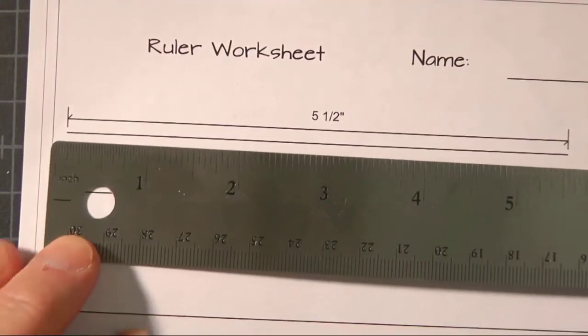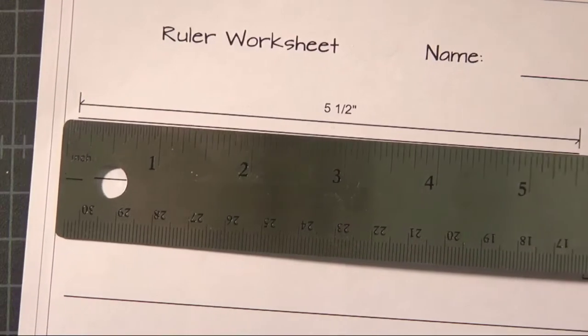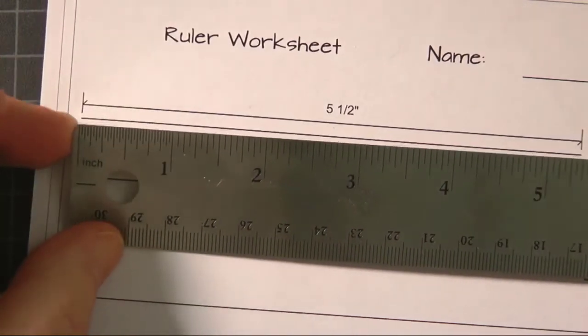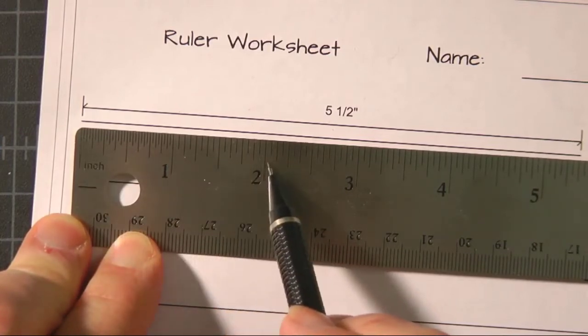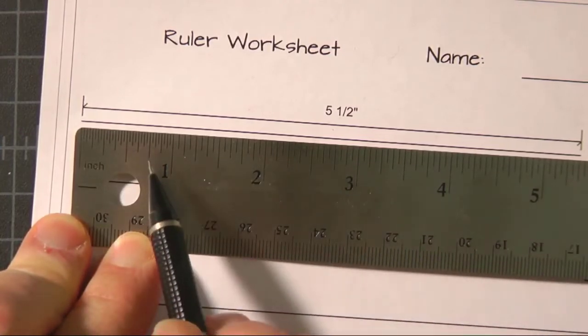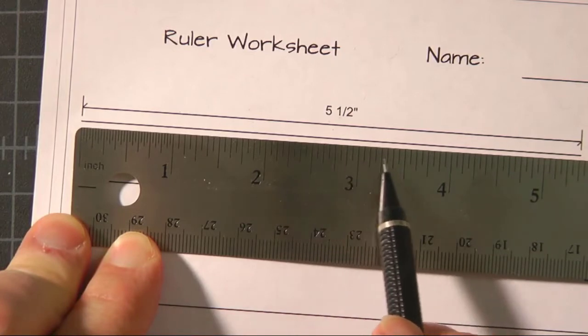Here we go. So using a ruler, we have all these measurements, starting from zero, and then we've got one inch and two inch and three inch and so on, and in the middle we have a lot of small lines that we're about to deal with.